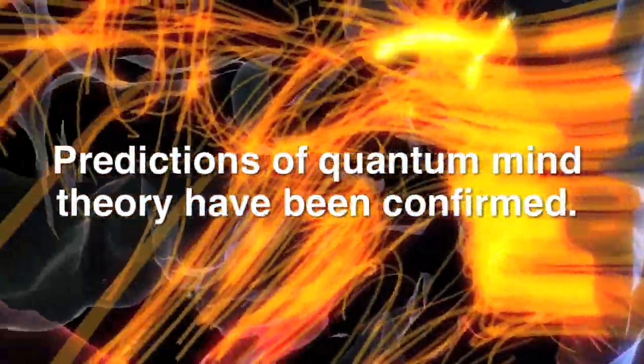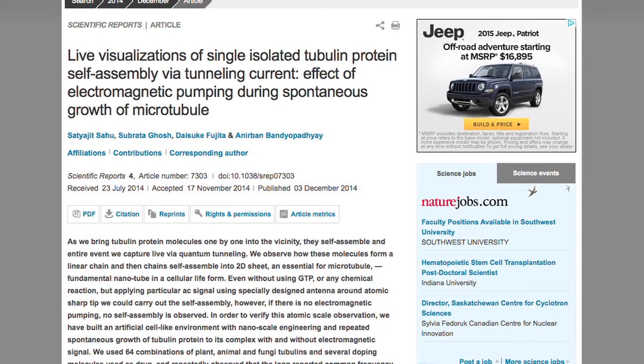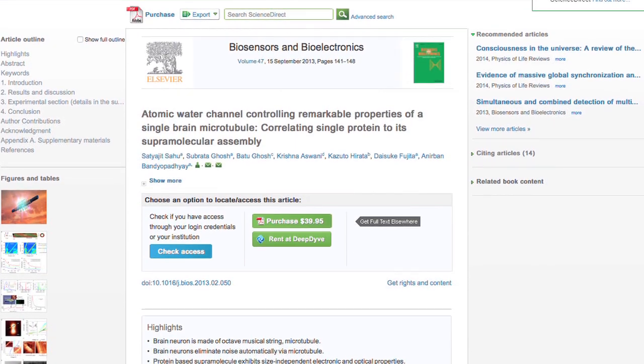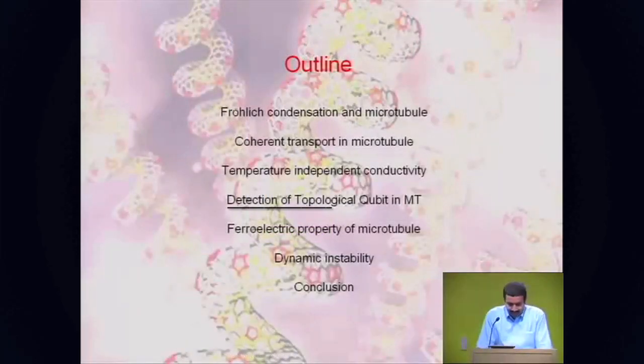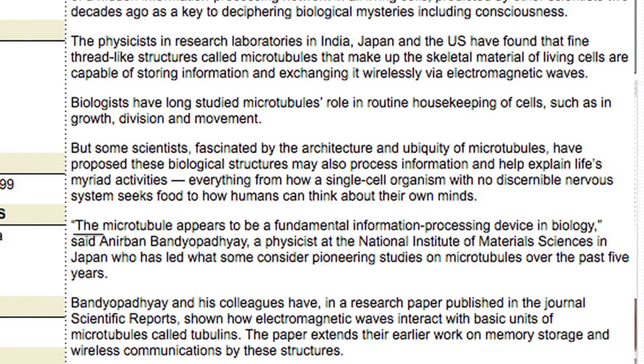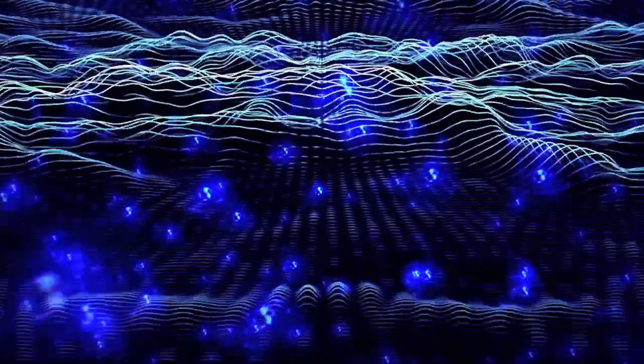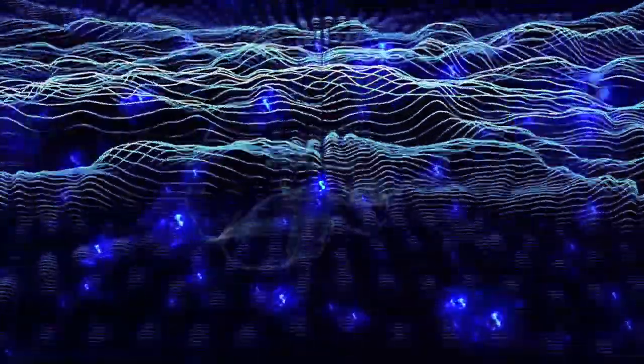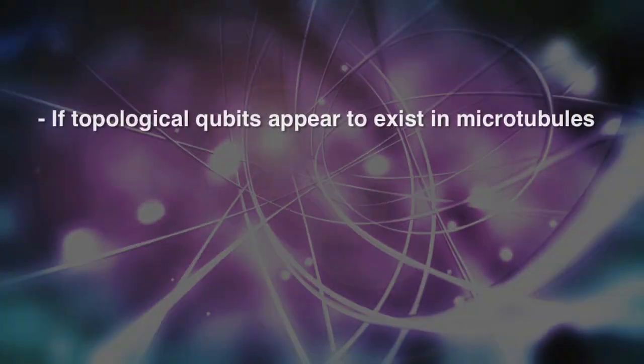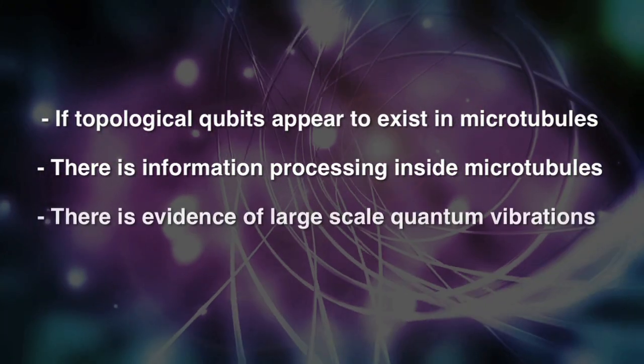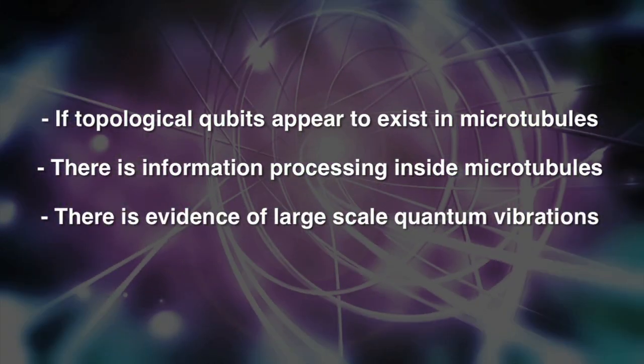Is there any actual evidence quantum effects are taking place inside the human brain? In fact, there is. Predictions of quantum mind theory have been confirmed. Information processing has been reported to exist in microtubules, and we have experimental evidence of large scale quantum vibrations coming from microtubules. In 2011, evidence of topological qubits was reported to exist inside microtubules. If we can piece this all together, it appears we have excellent experimental evidence the brain is quantum computing.